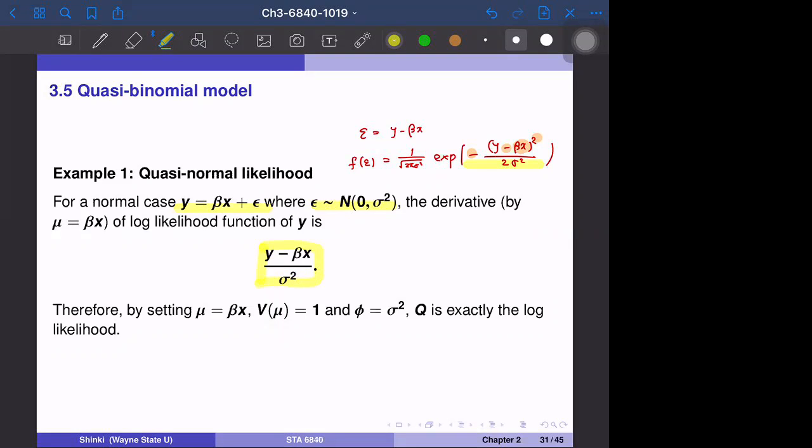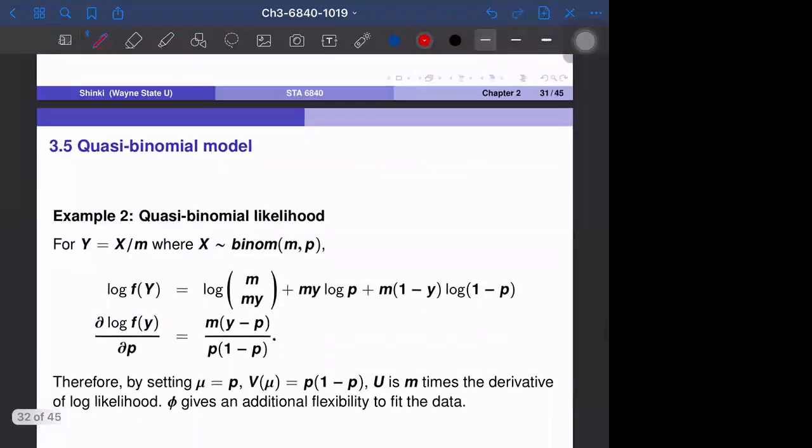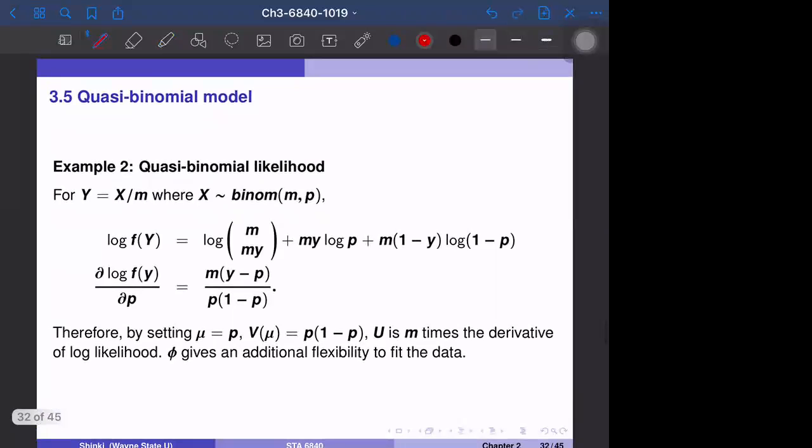Actually, this is the same as the shape of u_i. If we set mu equal to beta x and v of u equal to one and phi equal to sigma square, then the anti-derivative of this function with respect to mu, that is beta x, becomes exactly the log likelihood function. For normal case, the quasi likelihood function has this shape, and that is often used in estimation.